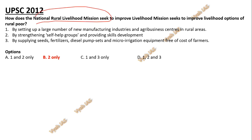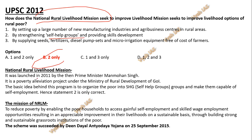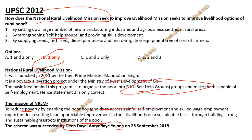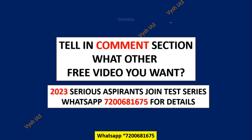For the second question on the National Rural Livelihood Mission (NRLM), the answer is option 2 only — strengthening self-help groups and providing skill development. The scheme was launched in 2011 by Manmohan Singh; it is a poverty alleviation project under the Ministry of Rural Development, organizing the poor into self-help groups to make them capable of self-employment. It has since been succeeded by the DAY-NRLM (Deendayal Antyodaya Yojana), and programs like Stand Up India and Startup India also contribute to livelihood improvement.